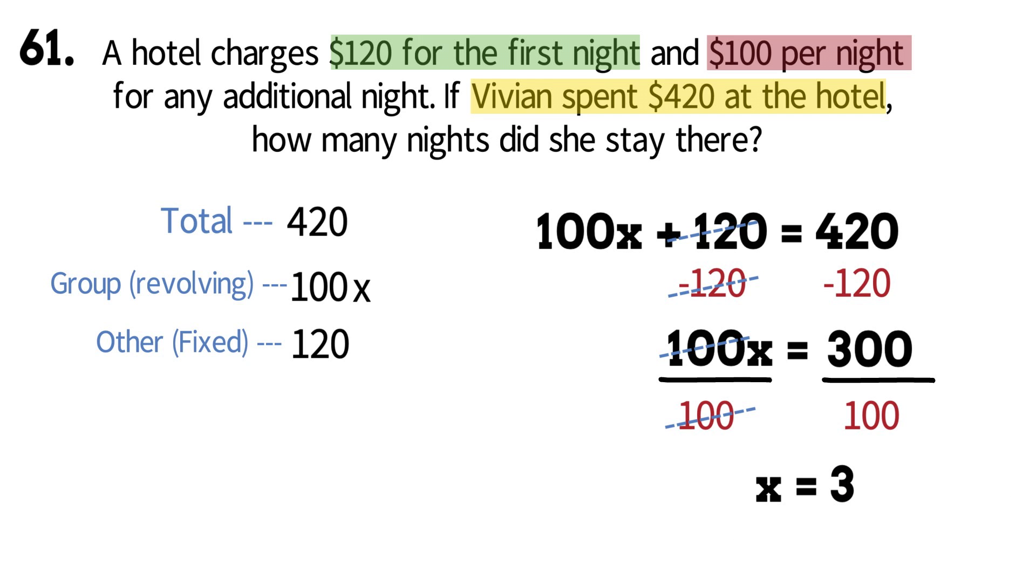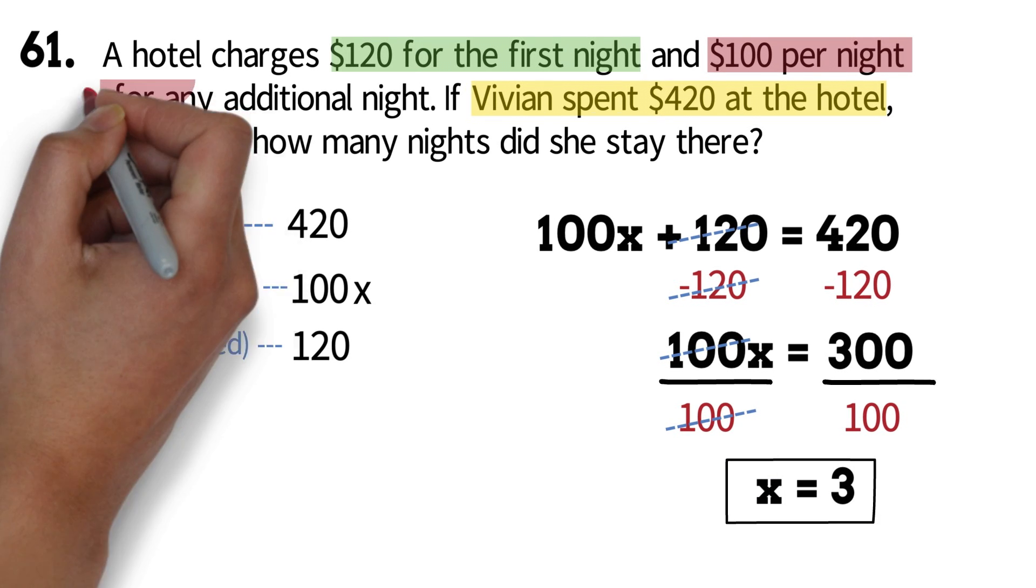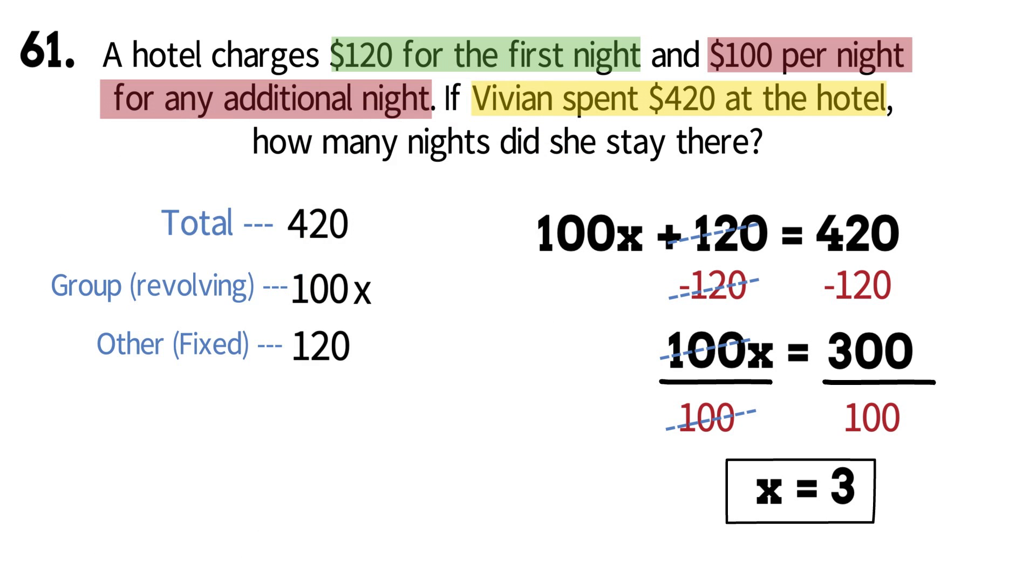Please, when you come to the end of every math question, you should be aware of what you were solving for and what the question is asking. A lot of students get wrong answers because they give answers that was not what the question is asking. Here, the three we had is the additional night she spent. To get the total nights, we have to add the first night to it. So she spent a total of four nights.